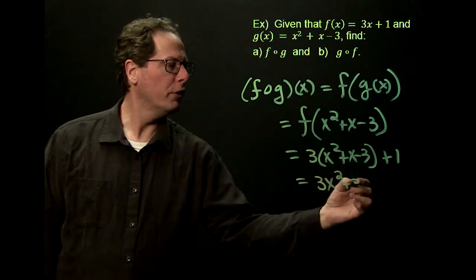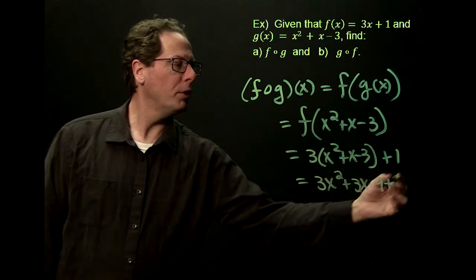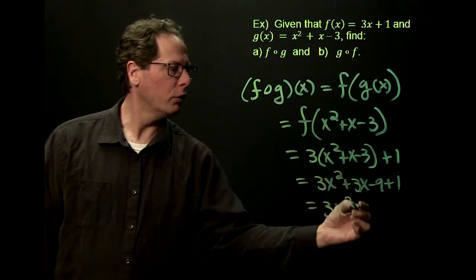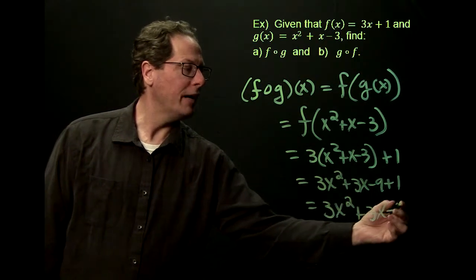You get 3x squared plus 3x minus 9 plus 1, and then the minus 9 and the plus 1 can combine, and so you get 3x squared plus 3x minus 8.